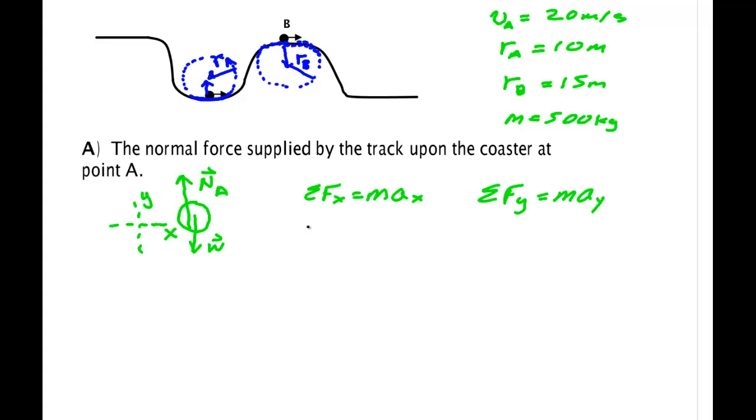Sum of the forces in X is M A X. Sum of the forces in Y is M A Y. Forces in X, there are no forces pointing along X. So that means that A X is 0. I've divided out the M in this case, which is 500. 500 times A is 0, then A is 0.